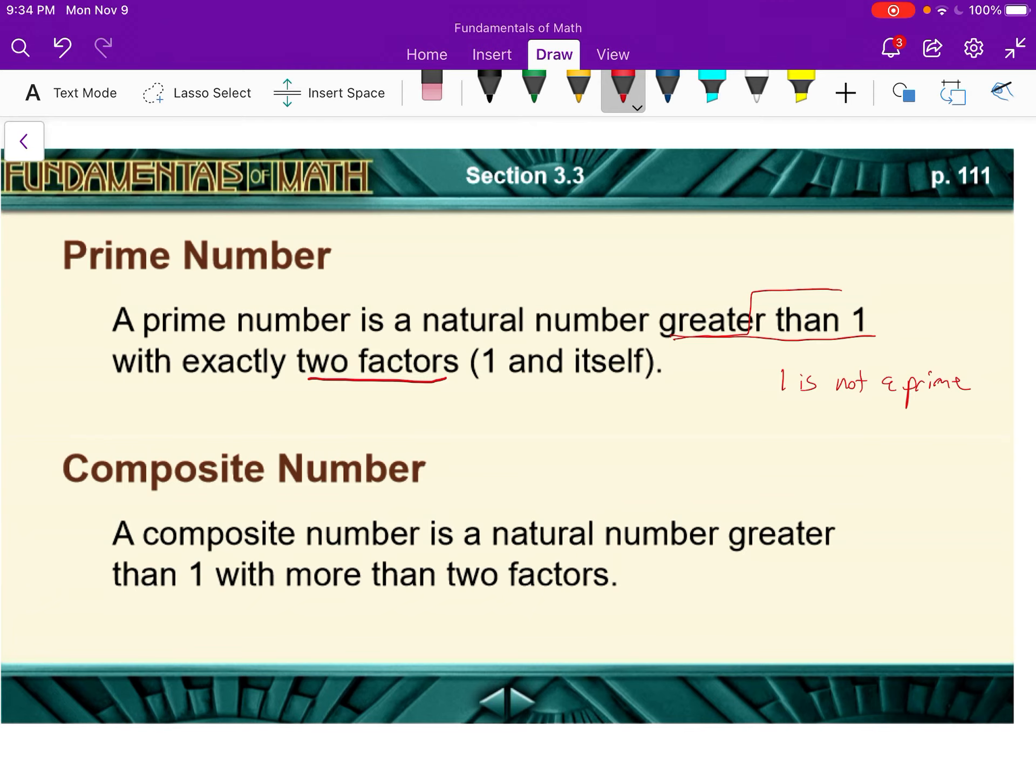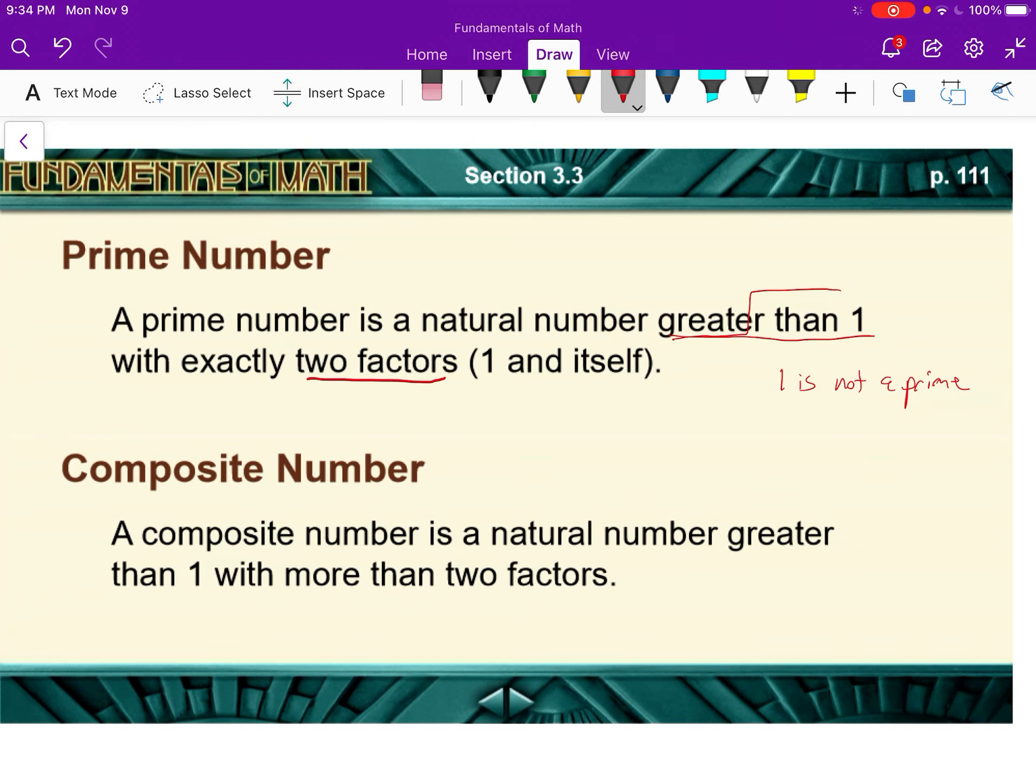So some examples of prime numbers are 2, because 2 times 1. 3. 4, is 4 a prime number? No, because 4 is 2 times 2 and 1 times 4. 5 is a prime number because it's just 1 times 5. 6? Nope, 1 times 6 and 2 times 3. 7? Yes. 8? Nope, because it's 2 times 4 and 1 times 8.